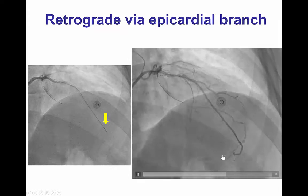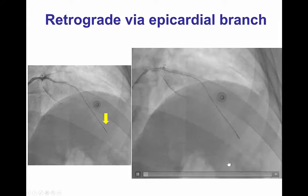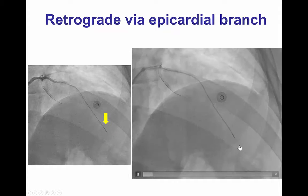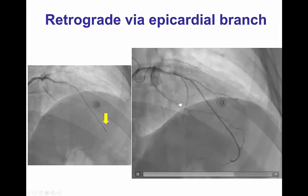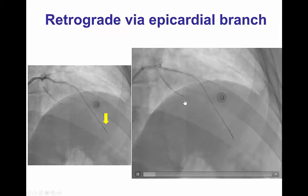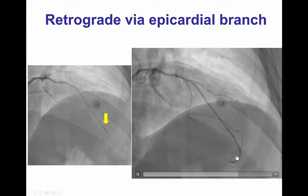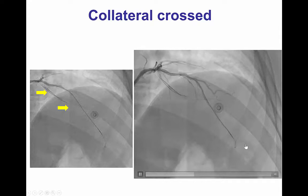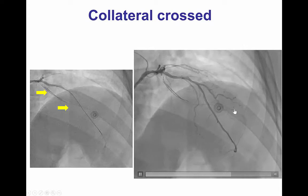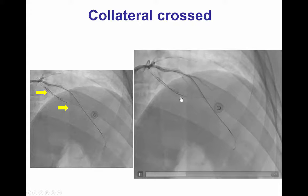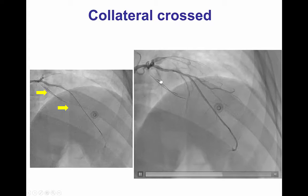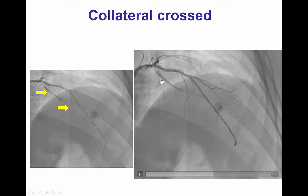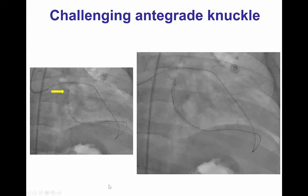We then noticed that the patient had a large epicardial collateral coming from the distal LAD all the way to the second obtuse marginal, and we were able to wire through this collateral using a CN wire all the way into the true lumen. We can now see that the retrograde wire is in a different plane than the antegrade subintimal guidewire.